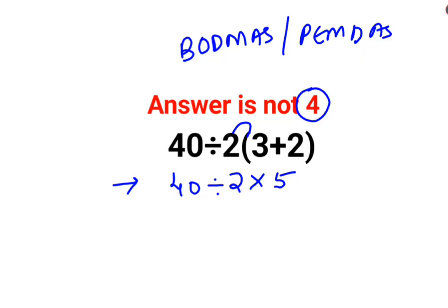Now at this point, a lot of people made the mistake of dividing 40 by 2, multiplied by 5 is 10, and then they got the answer as 4. No, that is not how these things are supposed to be done.